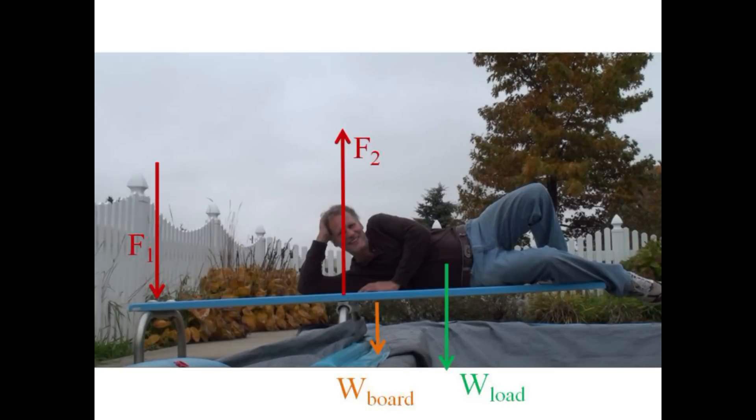A diving board and a cantilever are similar objects. The only upward force here creating counterclockwise torque about the left end is the support f2. The downward forces producing clockwise torques are the load, the weight of the board, and the downward pull of the support f1.